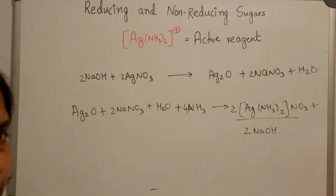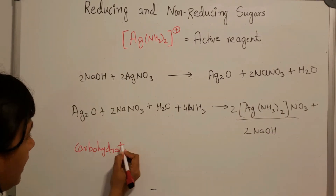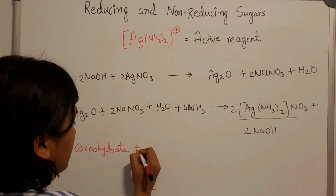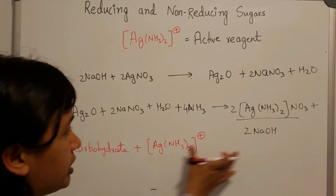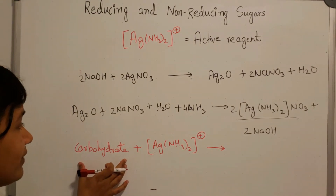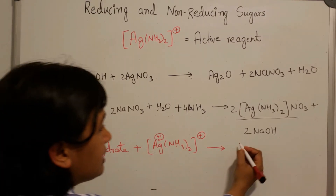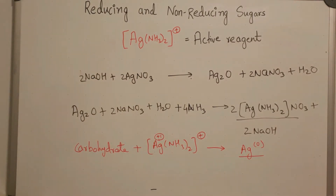To this solution of silver oxide in the test tube, a substantial amount of ammonia is added, resulting in the formation of the active silver-amine complex reagent, and sodium hydroxide is reformed. Once you have this active reagent prepared, you add the carbohydrate whose reducing property you want to determine. If the carbohydrate is a reducing sugar, it will reduce silver from the +1 oxidation state to the zero oxidation state — metallic silver — and a silver mirror forms on the test tube, indicating a positive Tollens test.